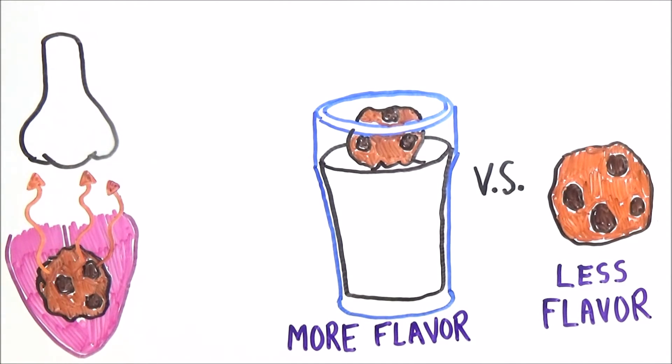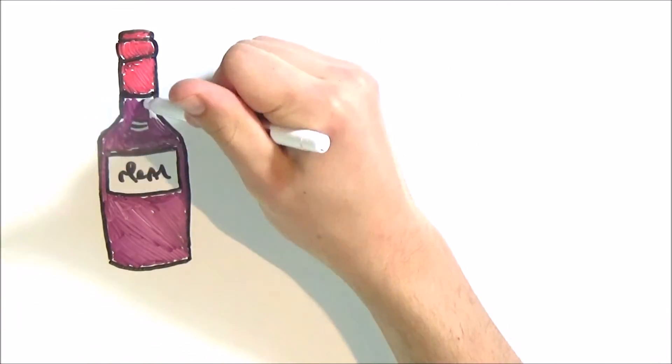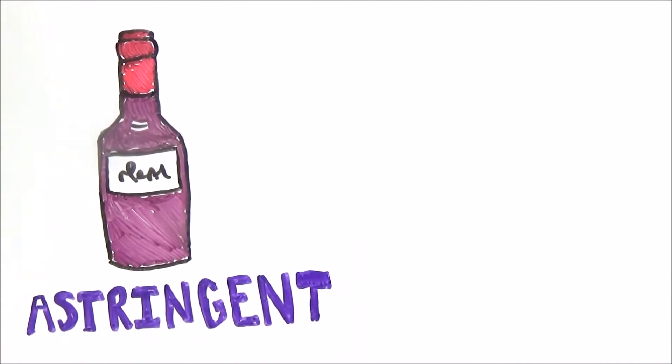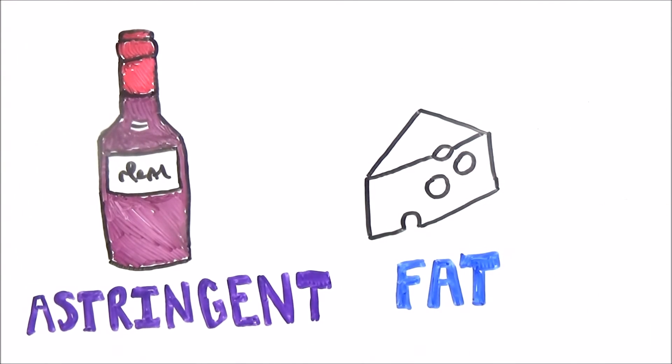Finally, for that last reason why milk pairs well with sweets, we have to take a look at why wine and cheese are great together. Wines contain astringents, which are molecules that make the mouth feel puckered, tart, or dry. Since the astringents make the mouth feel this way, the fat in cheese makes for an excellent combo.